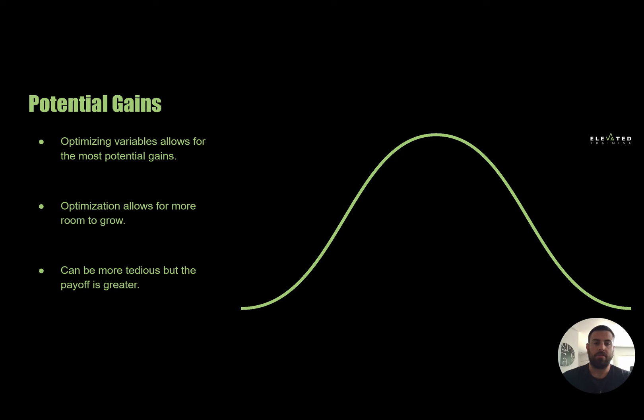These are the gains, right? And this bell curve represents your ability to make those gains and how you would find yourself somewhere in here depending on what you do to try to achieve those gains.